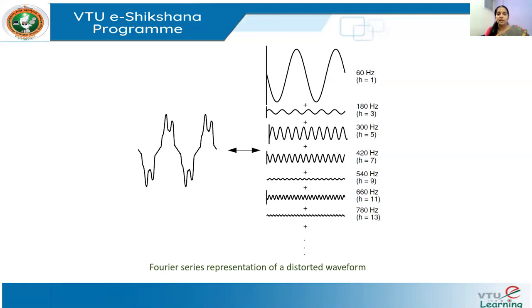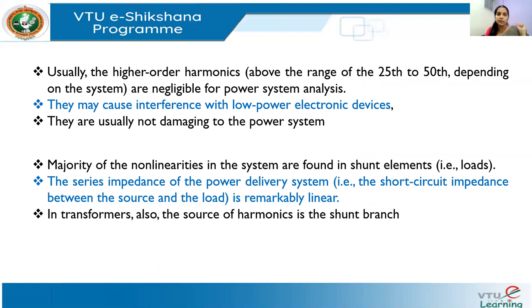As the harmonic index h increases, the amplitude of the harmonic component reduces. Higher-order harmonics, generally above the 25th, have highly negligible amplitude and do not significantly affect power system analysis. Therefore, in practice, higher-order harmonics can be eliminated from the analysis.